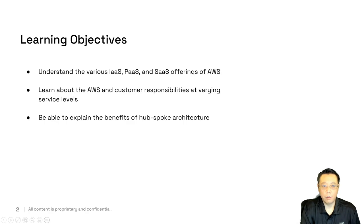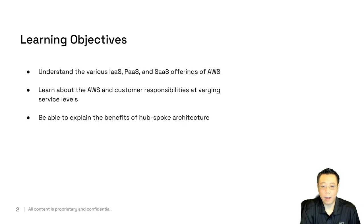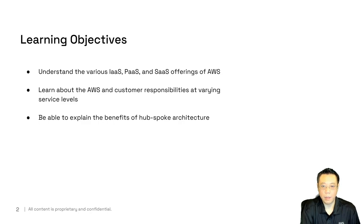Our learning objectives today include understanding the various service categories: infrastructure as a service, platform as a service, and software as a service — IaaS, PaaS, and SaaS. These are standardized terminologies across the cloud industry. We'll also learn about AWS and customer responsibilities at different service levels, explain the benefits of hub-and-spoke architecture, and why we need multiple accounts — not just single accounts — for wide enterprise business solutions.